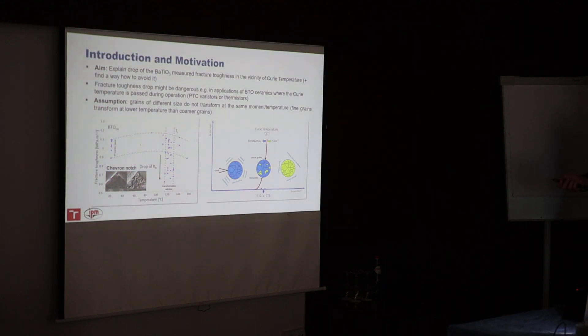The fact that when we measured the fracture toughness at different temperatures, we saw a relatively significant drop in fracture toughness in the vicinity of the Curie temperature when passing this transformation temperature where the material transfers from tetragonal to cubic lattice. This relatively big fracture toughness drop might be dangerous in case of some ceramics where the Curie temperature is passed during the operation, as for example PTC thermistors and so on.